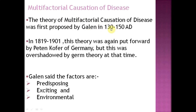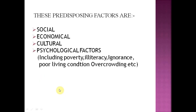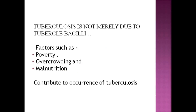Multifactorial causation was first introduced by Galen around 130–150 AD, and later by Pettenkofer of Germany in the 19th century, though it was overshadowed by the golden era of bacteriology. Social, economic, cultural, and psychological factors all contribute to disease production. For example, tuberculosis is not just due to bacteria — it is also due to poverty, overcrowding, and malnutrition.